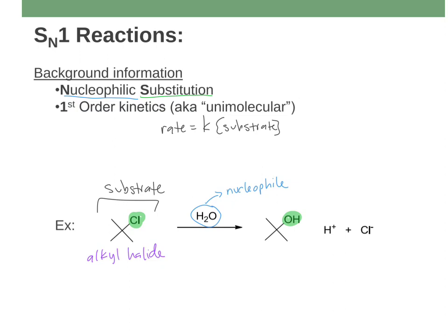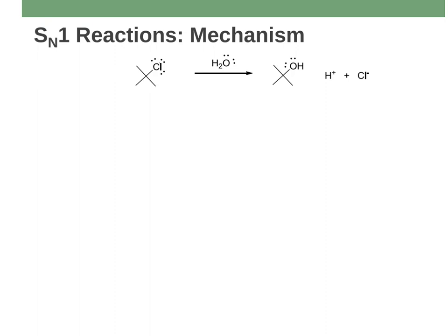Let's take a look at what the actual mechanism looks like. I drew all of the lone pairs because I want to show you the actual mechanism. Now, we learned about SN2 reactions previously, so I want to ask: why is this an SN1 reaction? Could it be, or could it not be?